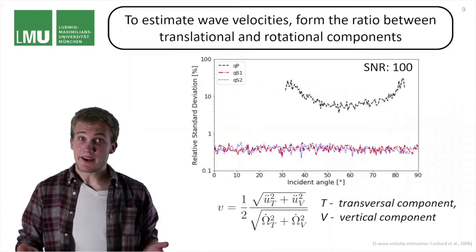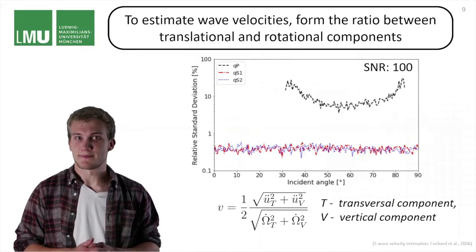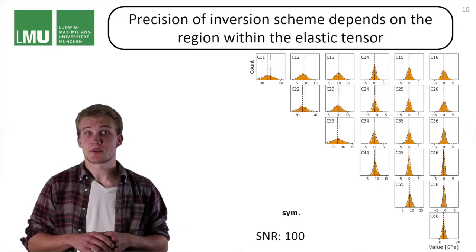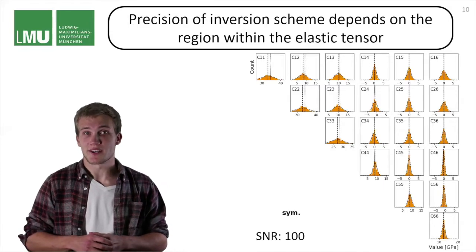Now we have all the ingredients to do the elastic tensor estimation. Let's have a look at this. For this elastic tensor estimations, we have used measurements for 25 randomly distributed events at a signal to noise ratio of 100.